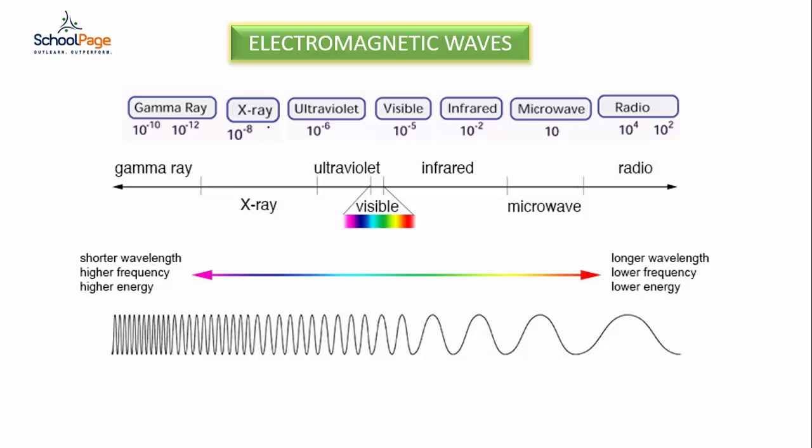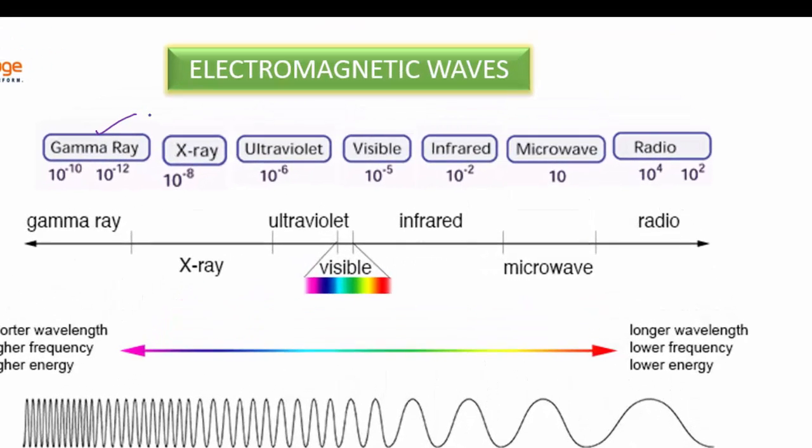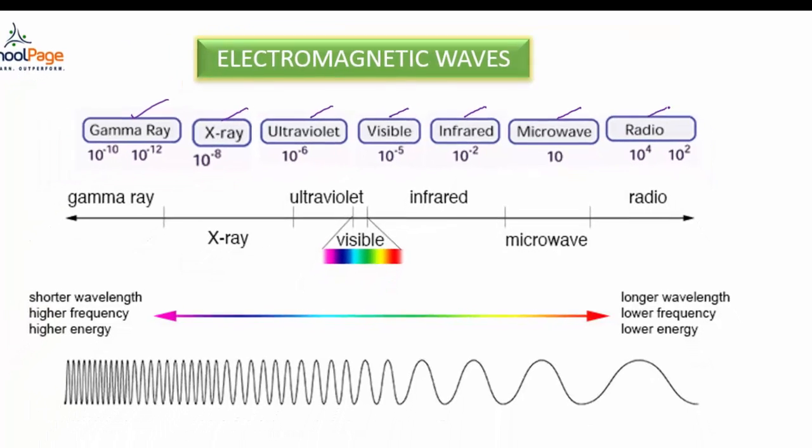On screen you can observe the different types of electromagnetic waves: gamma rays, X-rays, ultraviolet, visible light, infrared rays, microwaves, and radio waves.